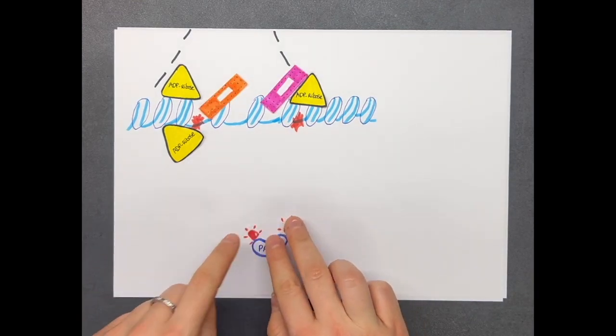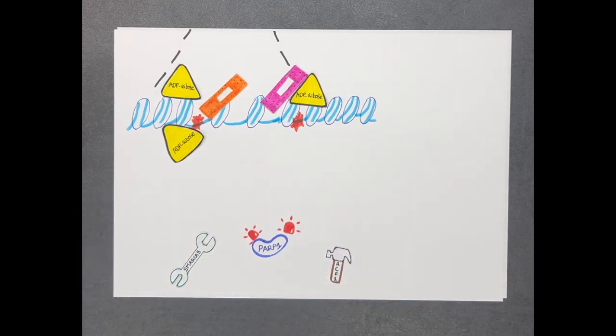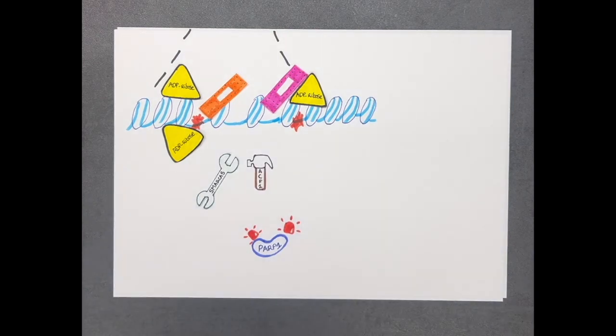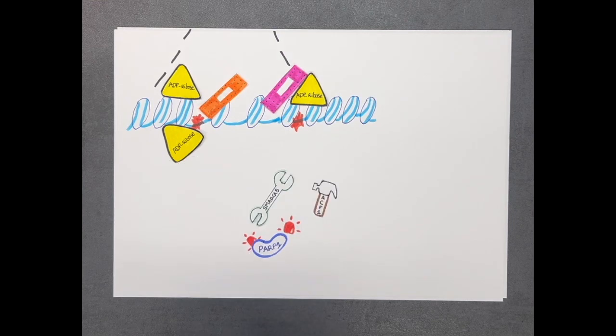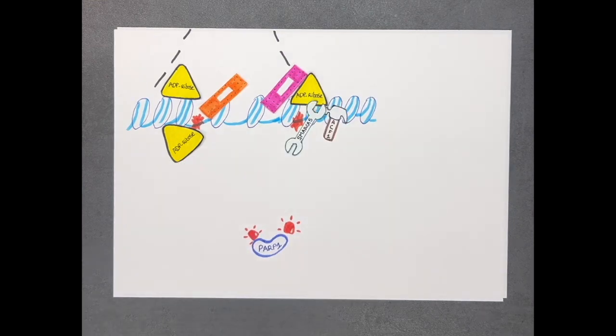In this work, we studied the recruitment mechanism of the protein ACF1 and SMRK5 that act together during DNA repair. We showed that while the accumulation of these two factors to DNA damages rely on PARP1 activity,